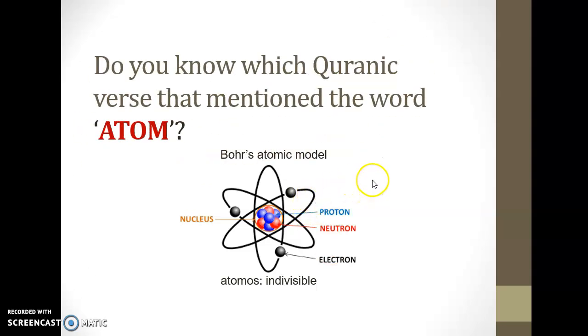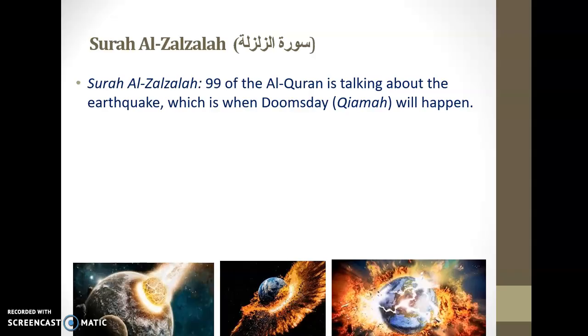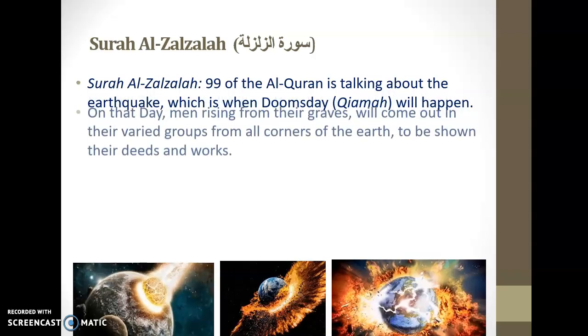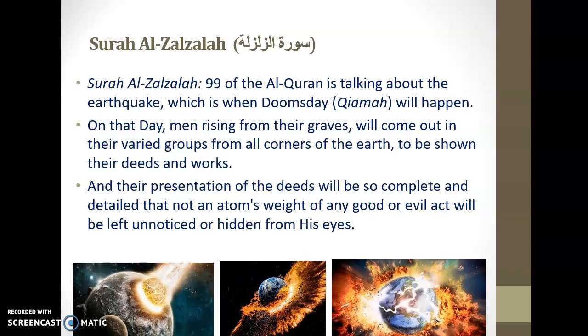You have learned that Bohr's atomic model showed that electron moves around the nucleus in an orbit. Atomos means something that cannot be divided. In Al-Quran, Surah Al-Zalzalah, this is Chapter 99. On the Doomsday, men will rise from their graves, and their good deeds and their bad deeds will be presented so complete and detailed that not an atom's weight of any good or evil will be left unnoticed by Allah SWT.